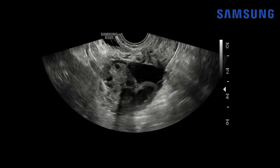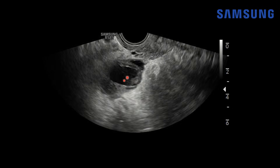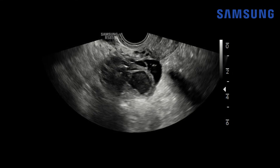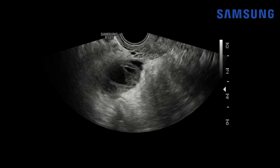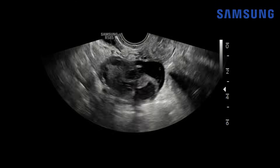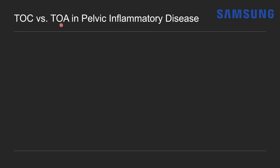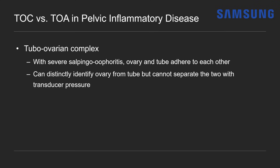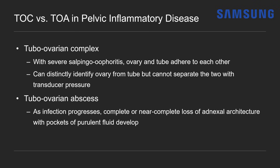On cine imaging, the transverse view shows that thick-walled tube with complex fluid adjacent to an enlarged ovary whose follicles are peripherally displaced. You can still distinctly identify it as the ovary; you just can't separate it from the inflamed tube with transducer pressure — that's a tubo-ovarian complex. If infection continues without treatment, it evolves into a tubo-ovarian abscess: you lose ovarian architecture, can't distinguish ovary from tube, and see multilocular pockets of purulent fluid with septations and irregular margins.